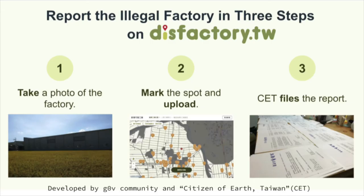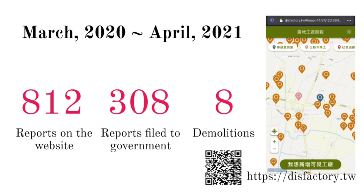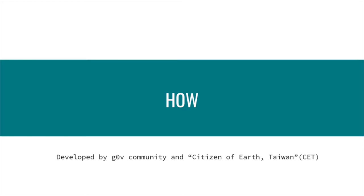The idea of This Factory was very simple. The civil society organization that raised the idea — Citizens of Earth Taiwan — wanted something simple: you take a photo, mark the location, and the data is automatically printed out as an official document sent to the government so they can run their campaign. Over the past year we got some results — eight factories were demolished and others are still in process. That's all about what This Factory is, because today I want to focus more on how we did it.